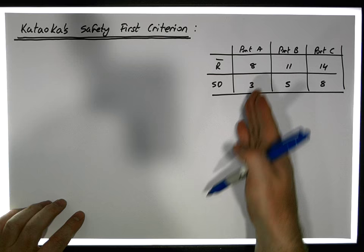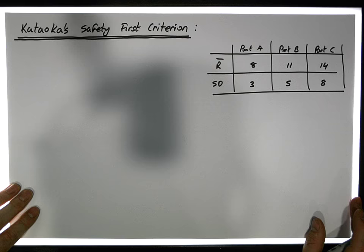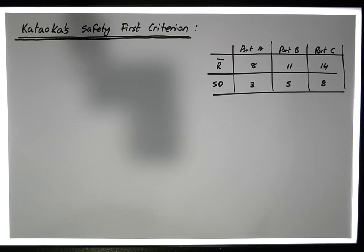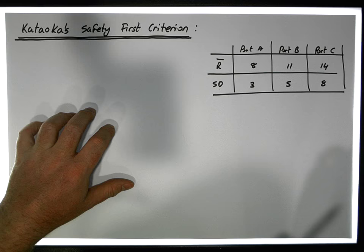The question is: which portfolio should we choose based on the Katoka Safety First Criterion? First, let's consider RIA's Criterion. RIA's Criterion asks us to choose a minimum return level that we don't want to fall below, and to choose the portfolio that minimizes the probability of falling below that return level.